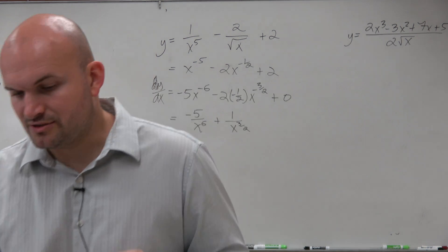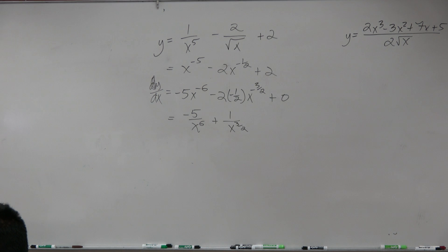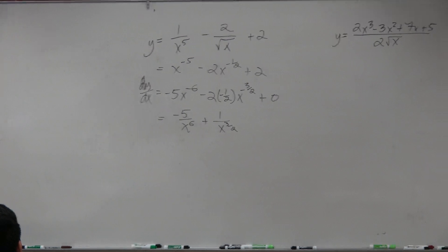Because remember, the derivative of a constant is always going to be equal to 0. Yes? So if you would have just left it as a negative 5, like if that's the one above it, that would be wrong? No. So, like...